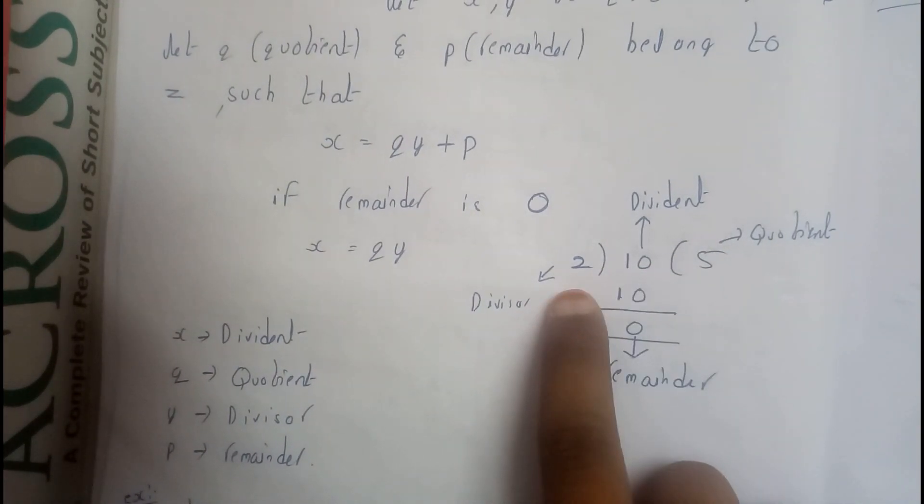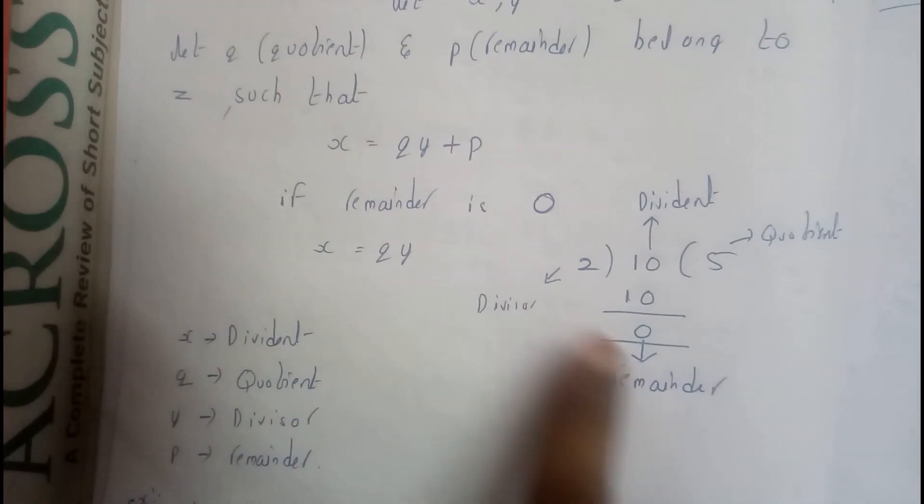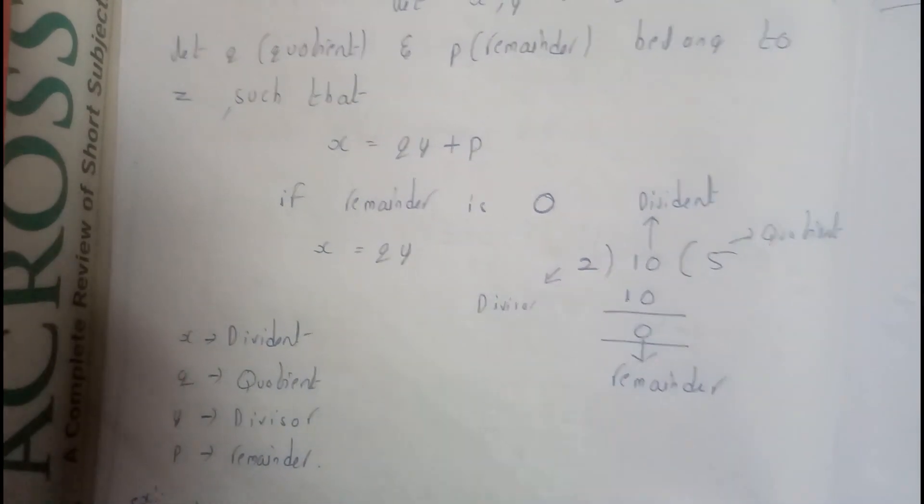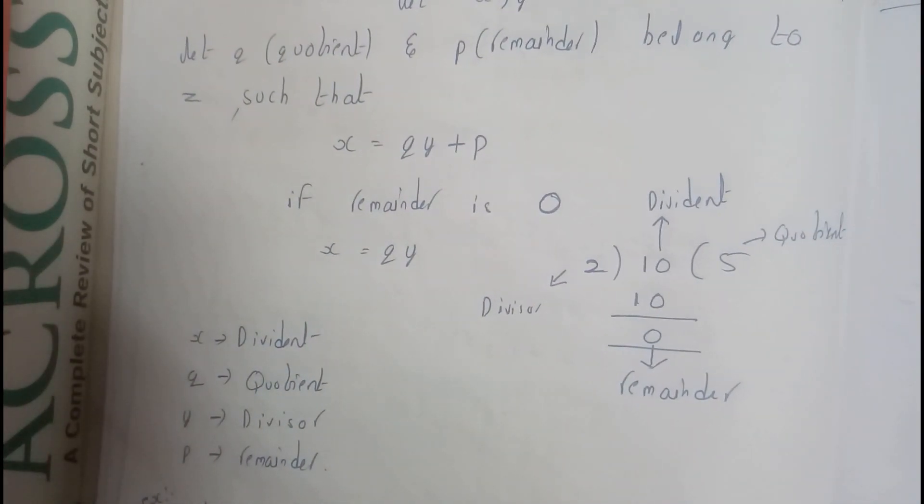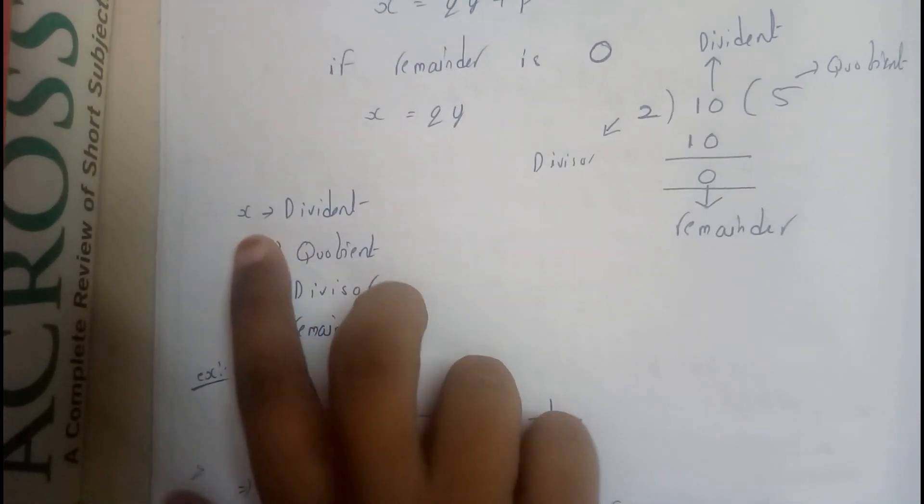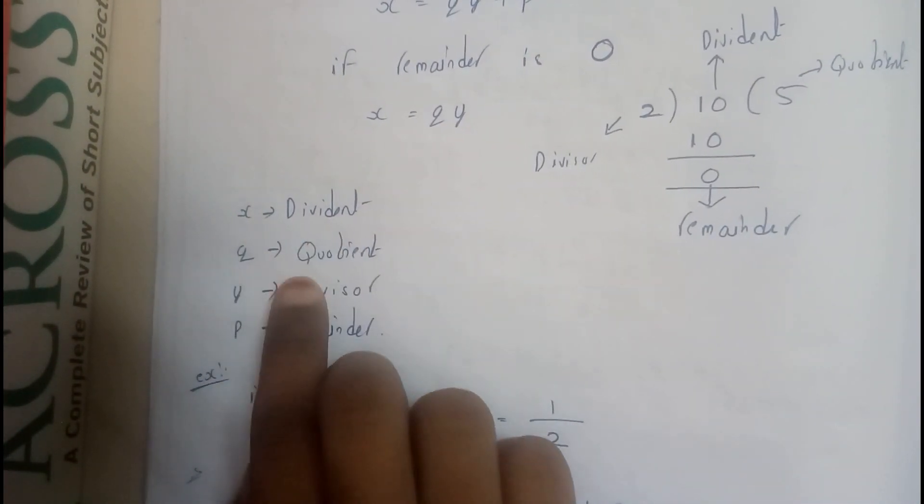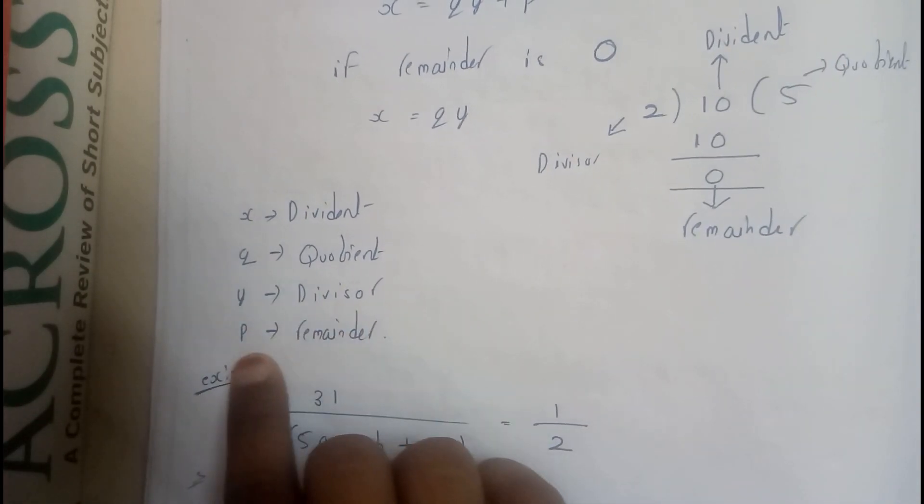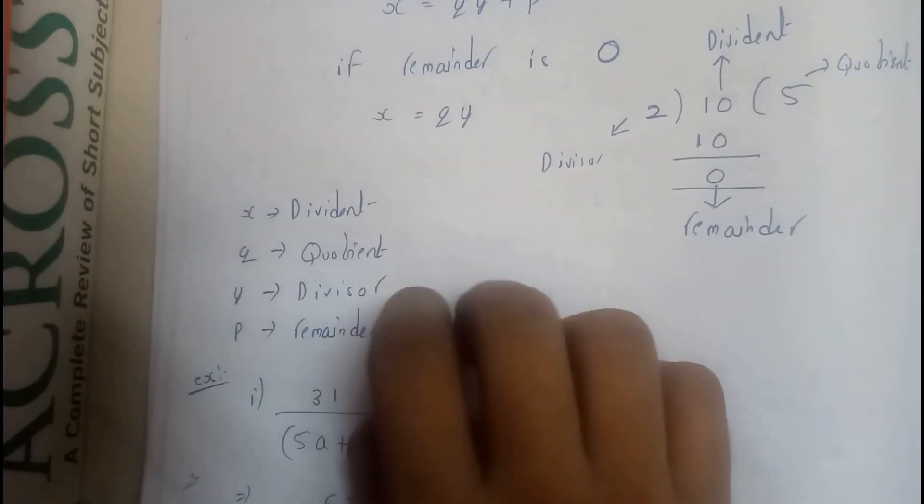So this we call divisor, dividend, quotient, remainder. So if you want to verify this, 10 equals q into d, which is 5 into 2, which is 10 plus 0. Okay guys, I hope everyone got the same result. Here x is dividend, q is quotient, y is divisor, and p is the remainder.